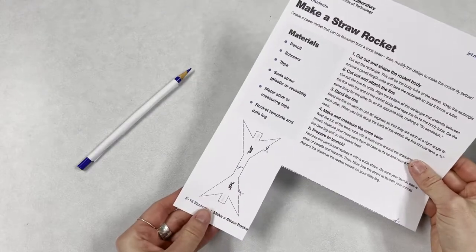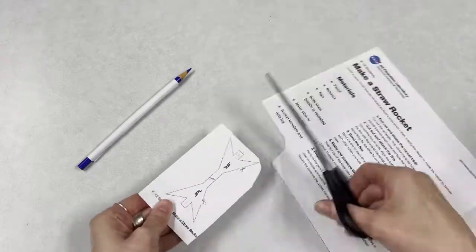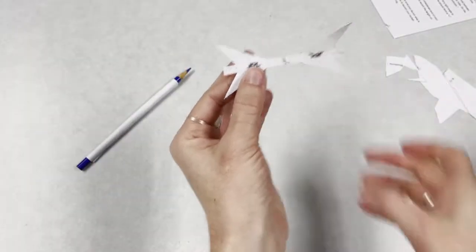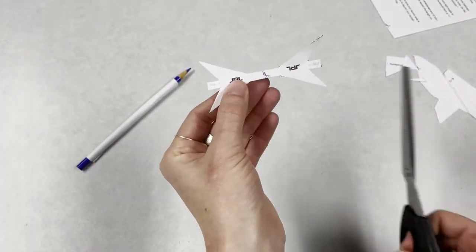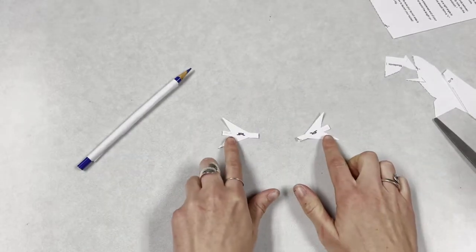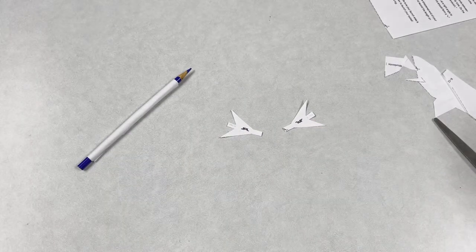Now let's cut out the fins. Once you have this shape cut out, go ahead and cut right in the center so that you have two pieces that look like that.